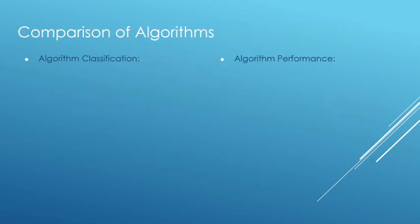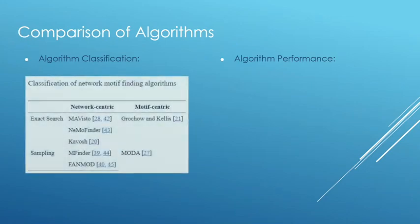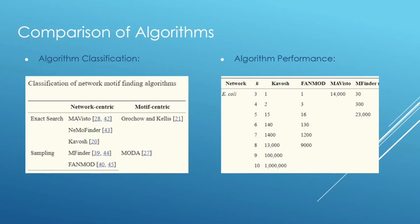So here we can see a classification of several well known algorithms for motif finding as well as their performance. So we can see that network centric algorithms are more popular and also generally faster than motif centric algorithms. We can also see that exact search algorithms can be quite fast as seen with kibosh. And this is because of the really efficient pattern growth tree step that only takes in unique subgraphs.